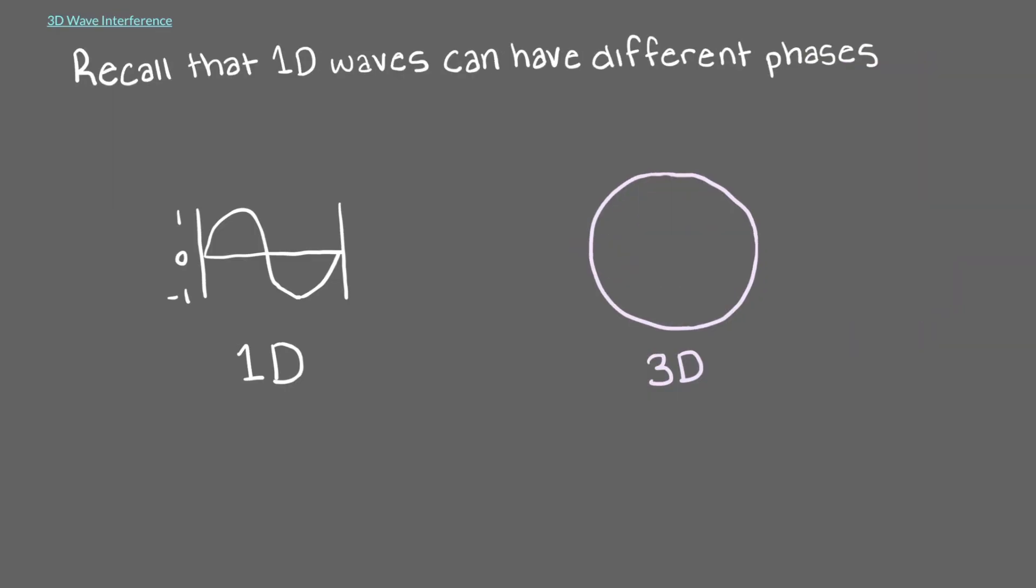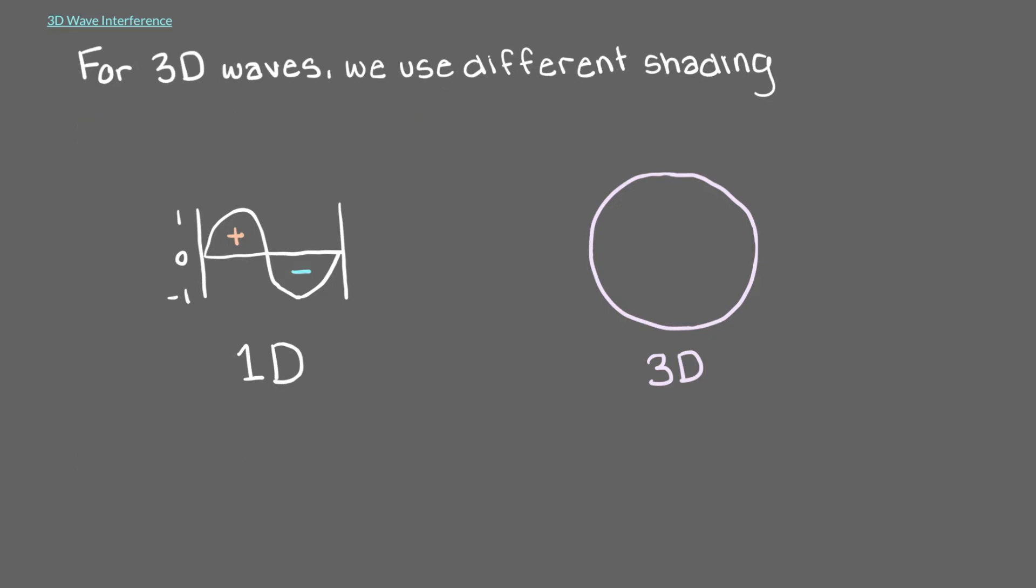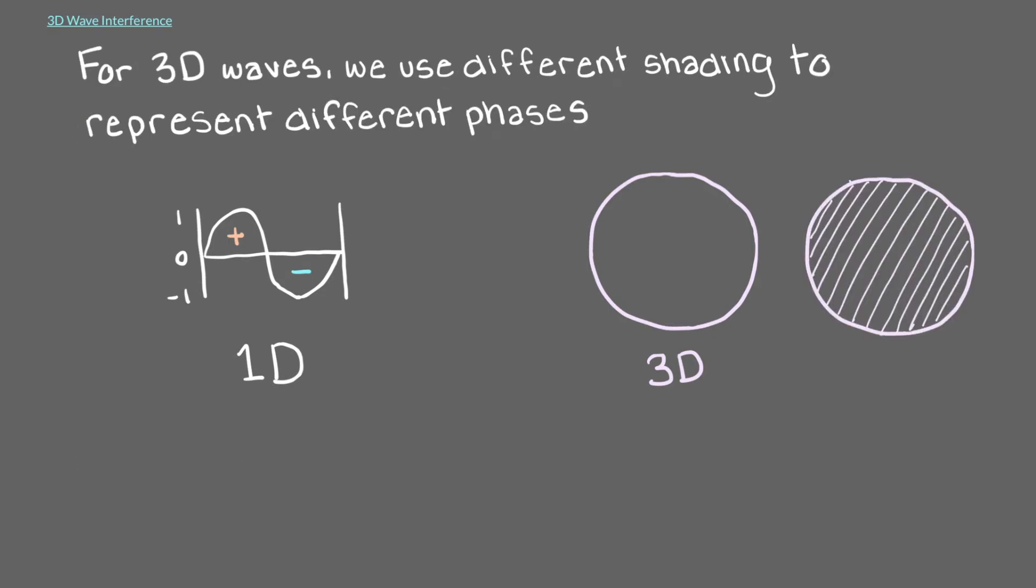Recall that in our one-dimensional waves, we can have different phases, positive and negative. The same is true in 3D. For 3D waves, we use different shading to represent the different phases. So an unshaded wave would have one phase, and a shaded wave will have the opposite phase.